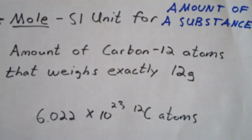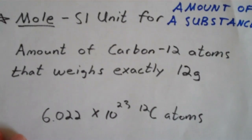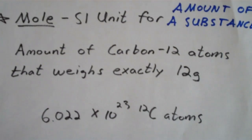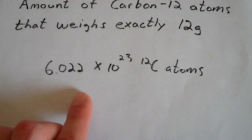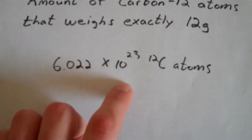So the mole, what the mole is, is the SI unit for amount of a substance. And the definition of a mole is the amount of carbon-12 atoms that weighs exactly 12 grams. And that turns out to be 6.022 times 10 to the 23rd carbon-12 atoms.